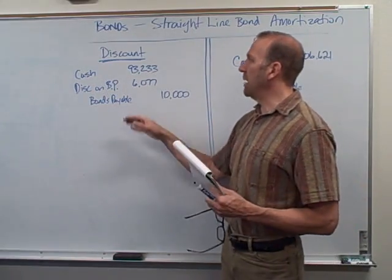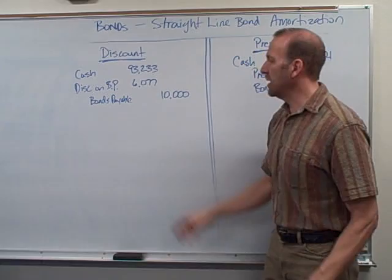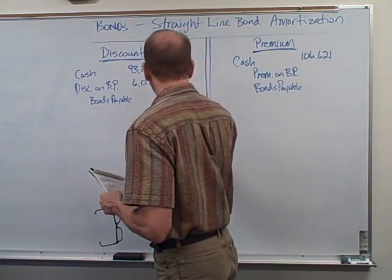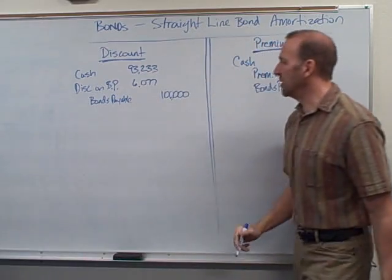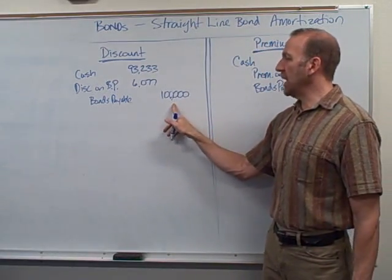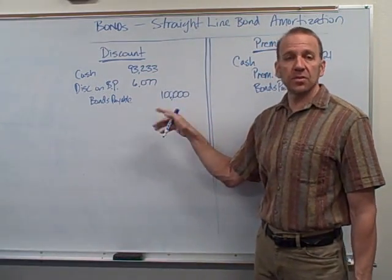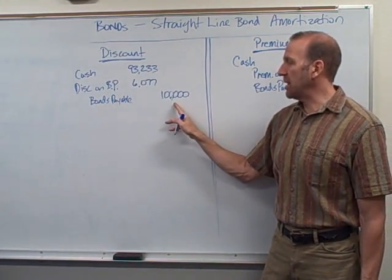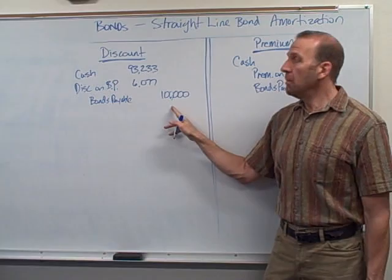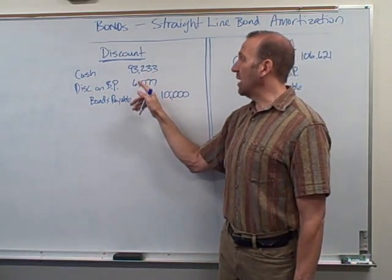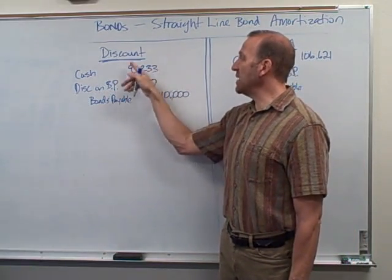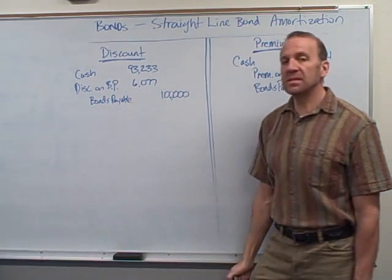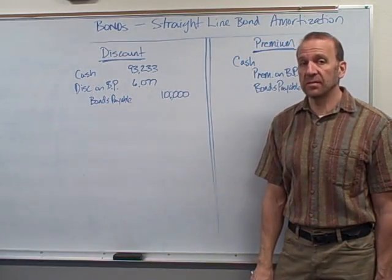So this here is a bond selling at a discount. The bonds are going to be a hundred thousand dollar bonds in the future, like four years from now — that's what we're going to pay out. We're going to pay out a hundred thousand dollars for these bonds, but they're selling today at a discount. So we're only going to get in ninety three thousand two hundred and thirty three dollars. There's a discount of six thousand and seventy seven dollars on these bonds.